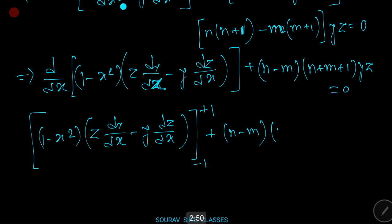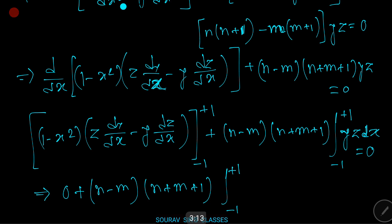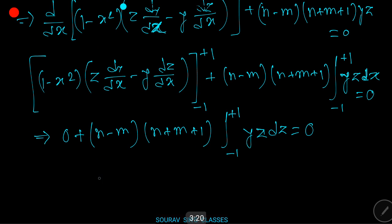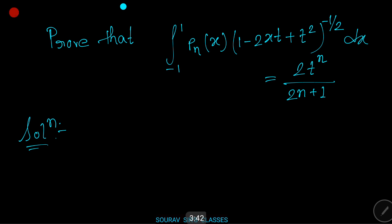Integrating from minus one to plus one: [boundary term] plus (n minus m)(n plus m plus 1) times integration from minus one to plus one of yz dx equals zero. That implies integration from minus one to plus one of Pn(x) times Pm(x) dx equals zero, if n is not equal to m.